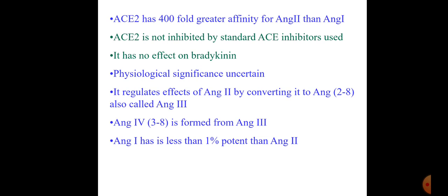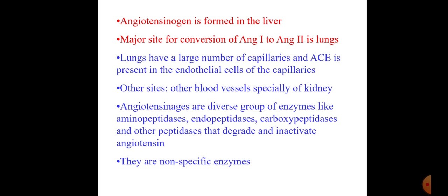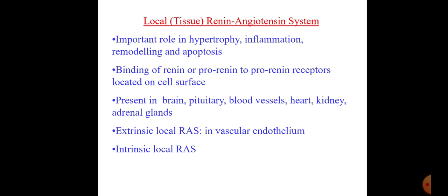Angiotensinogen is the precursor molecule of angiotensin 2, formed in the liver. The major site for conversion of angiotensin 1 to angiotensin 2 is the lung, which has a large number of capillaries with ACE present in endothelial cells. Other sites responsible for angiotensin 1 to 2 production include the kidney and blood vessels. Angiotensinases are a diverse group of enzymes — aminopeptidase, endopeptidase, carboxypeptidase — that degrade and inactivate angiotensin.